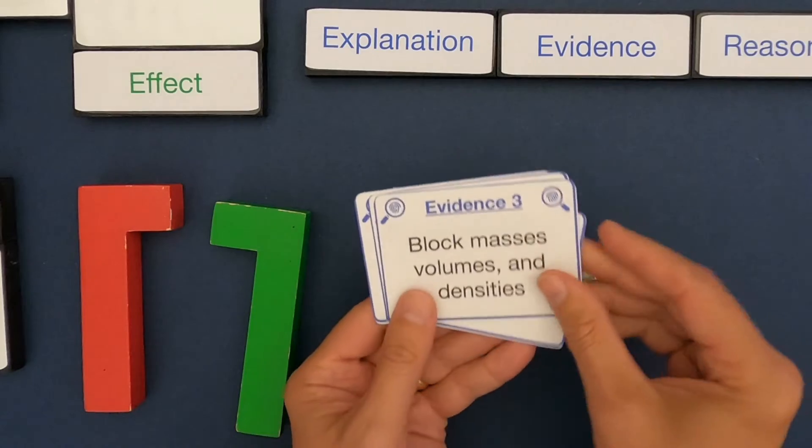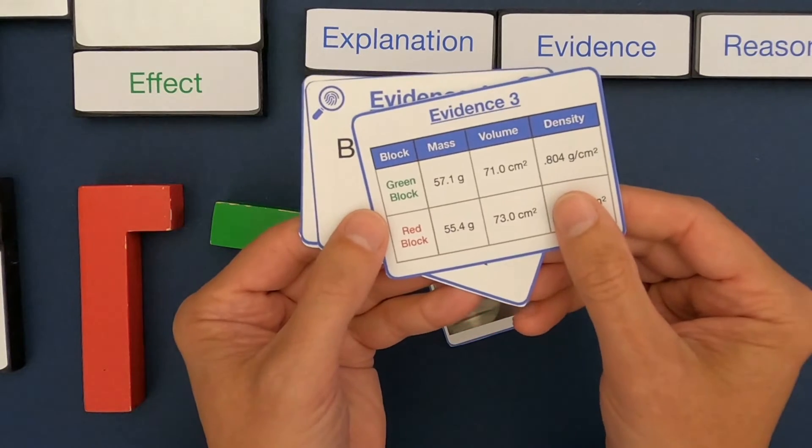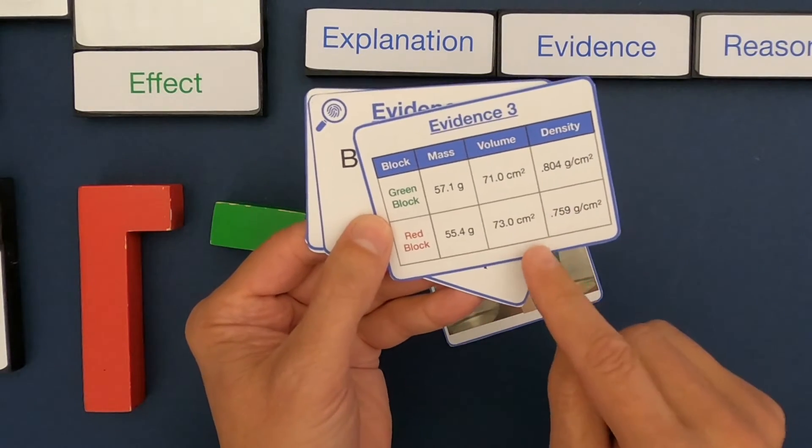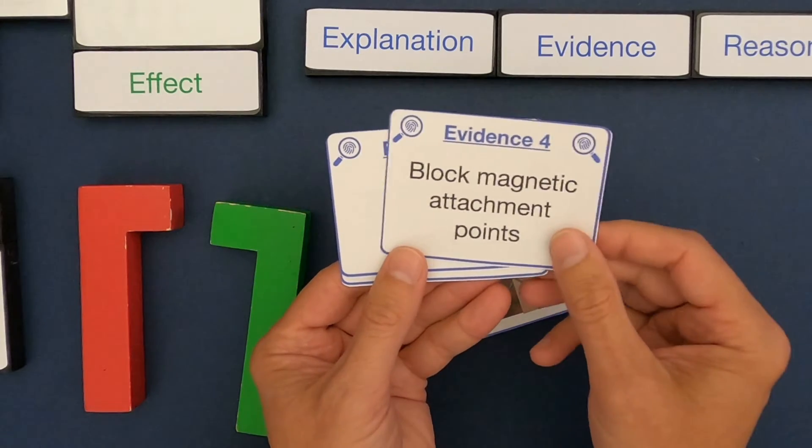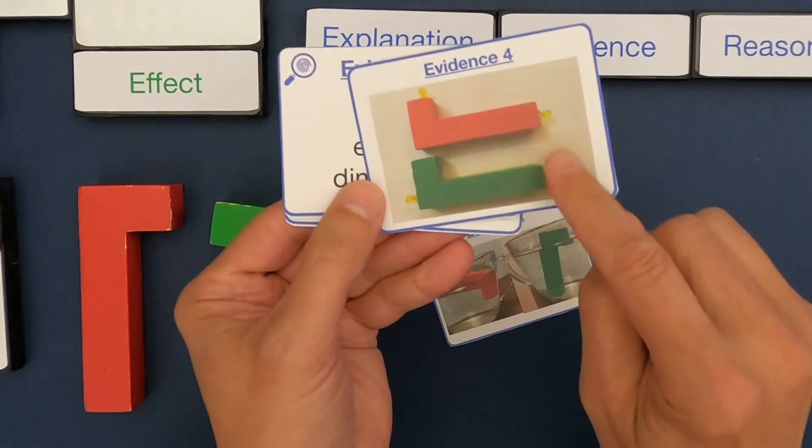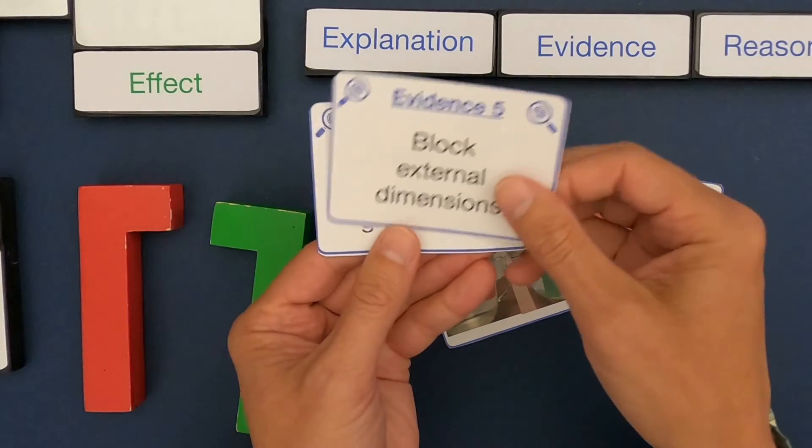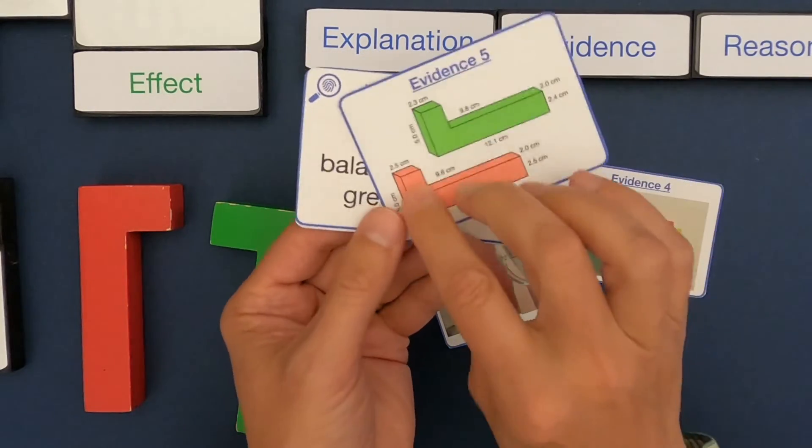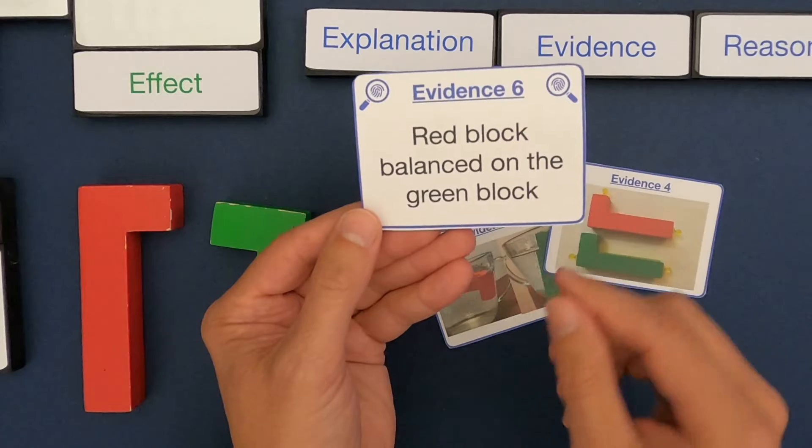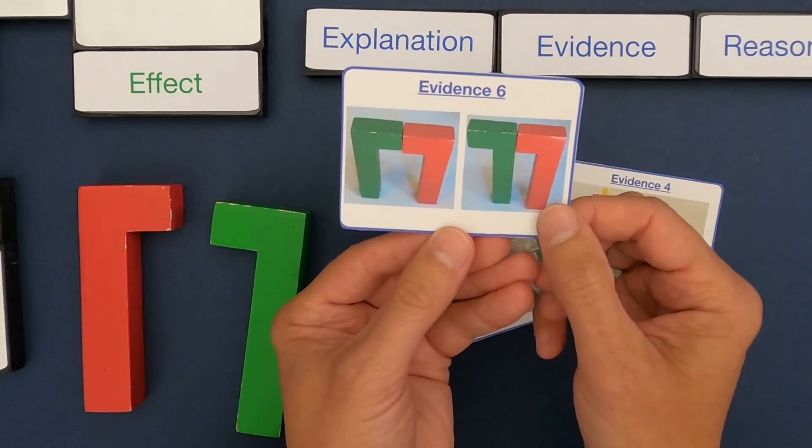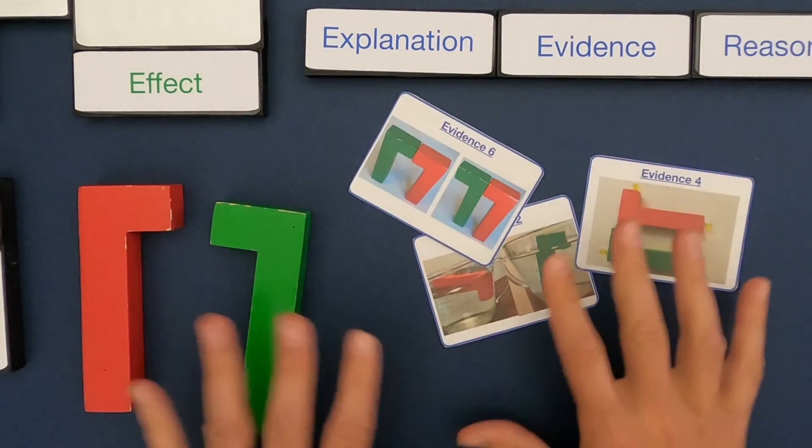If we look at the next one we've got a photograph of the blocks in water, so you can see that they float a little different. I would say that's going to be helpful evidence. Next one we're looking at the block masses, volumes, and densities. As I look at the data they have similar mass, similar volume, similar density, so I don't think that tells us much. The next one shows block magnetic attachment points, and I can see a magnet sticking in different points, and I can see a difference between the red and the green. I'm going to say that's good evidence. The next one is the block external dimensions. They look very similar, so I would say that's not helpful. And then the last one, red block is balanced on the green block. It looks like in this photograph you can actually make the red block stable by having it balance on the green. So I think these three pieces of evidence are important.